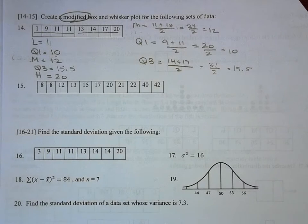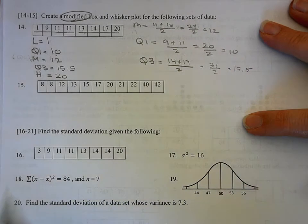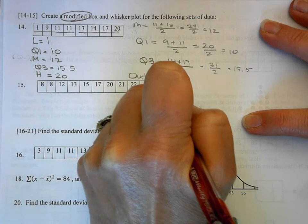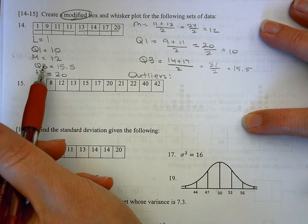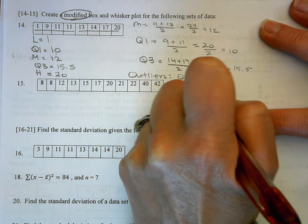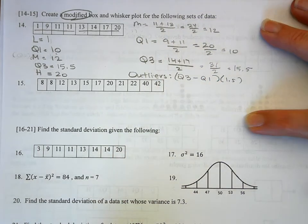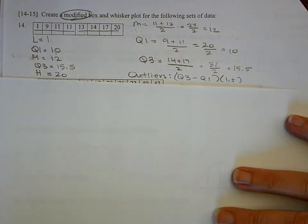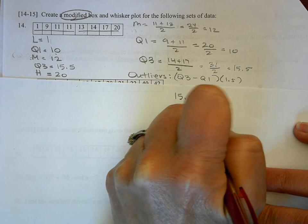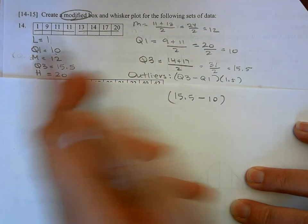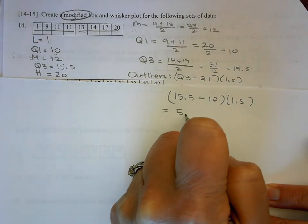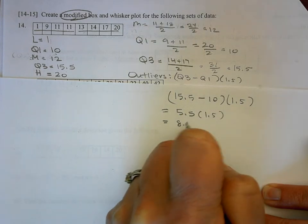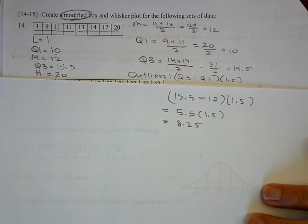If I was just doing a regular box-and-whisker I'd start plotting, but I want to check for outliers. To find my outliers I calculate the IQR — the interquartile range — which is Q3 minus Q1, then multiply by 1.5. So I do 15.5 minus 10, which is 5.5, times 1.5, which gives me 8.25.